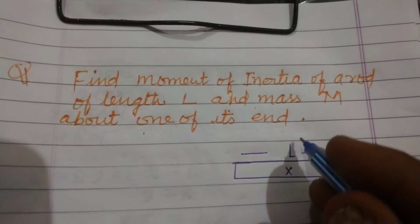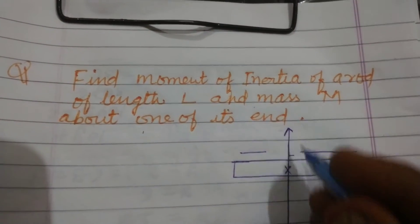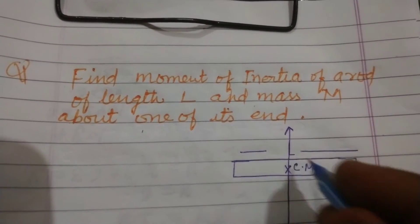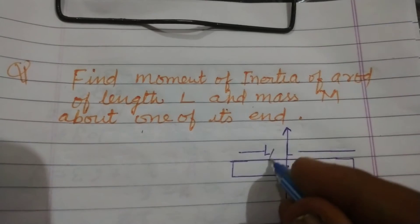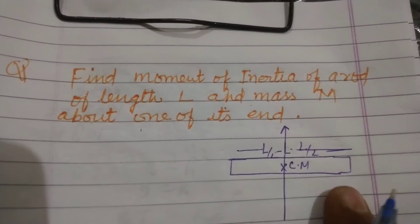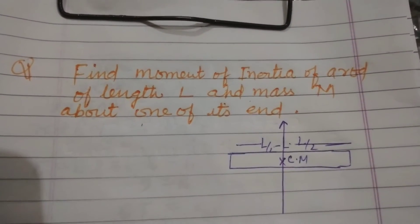And its center of mass lies between the rod. So this is the line which is passing through center of mass CM, and this is L/2. Center of mass of a rod lies at the midpoint of the rod.